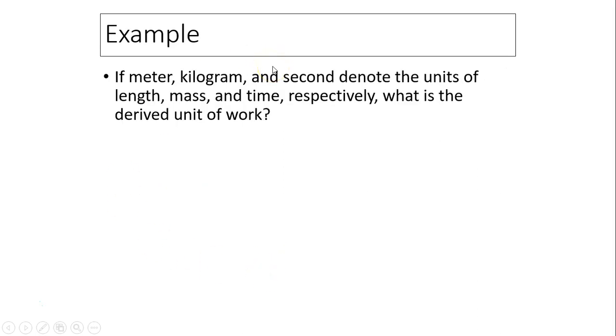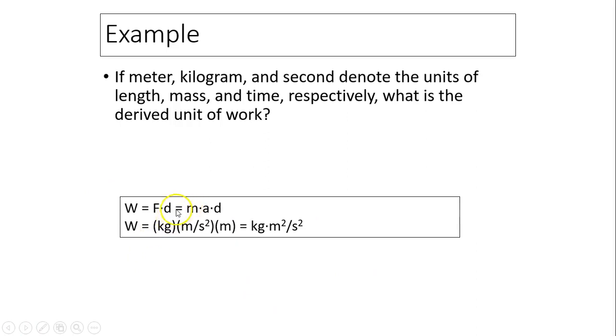Another example. If meter, kilogram, and second denote units of length, mass, and time respectively, what is the derived unit for work? How do we get that? We look at the definition of work. Work is defined as force times displacement. Force is mass times acceleration times distance. The unit for mass is kilogram, the unit for acceleration is meter per second squared, the unit for distance is meters. We combine these three to get a derived unit for work, which is kilogram times meter squared over second squared. You should be familiar with this. Notice this is the unit for joules.